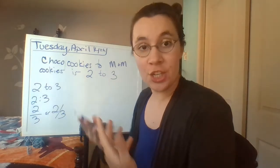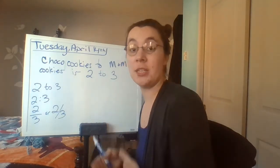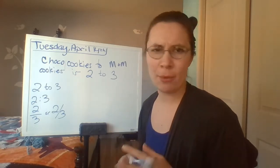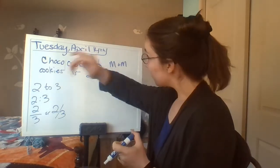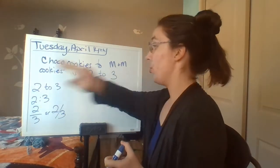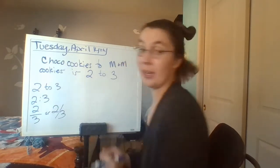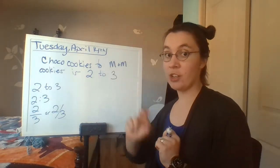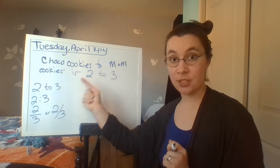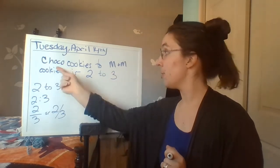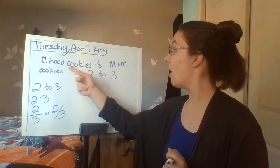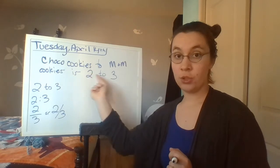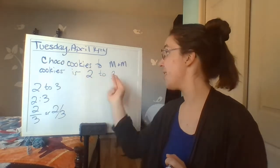So if I increase the number of chocolate chip cookies by two, I have to increase the number of M&M cookies by three. There are two chocolate chips for every three M&M cookies. The ratio of chocolate chip cookies to M&M cookies is two to three — two refers to the first one, three refers to the second one. It's in the same order, so the first number refers to the first item and the second number refers to the second item.